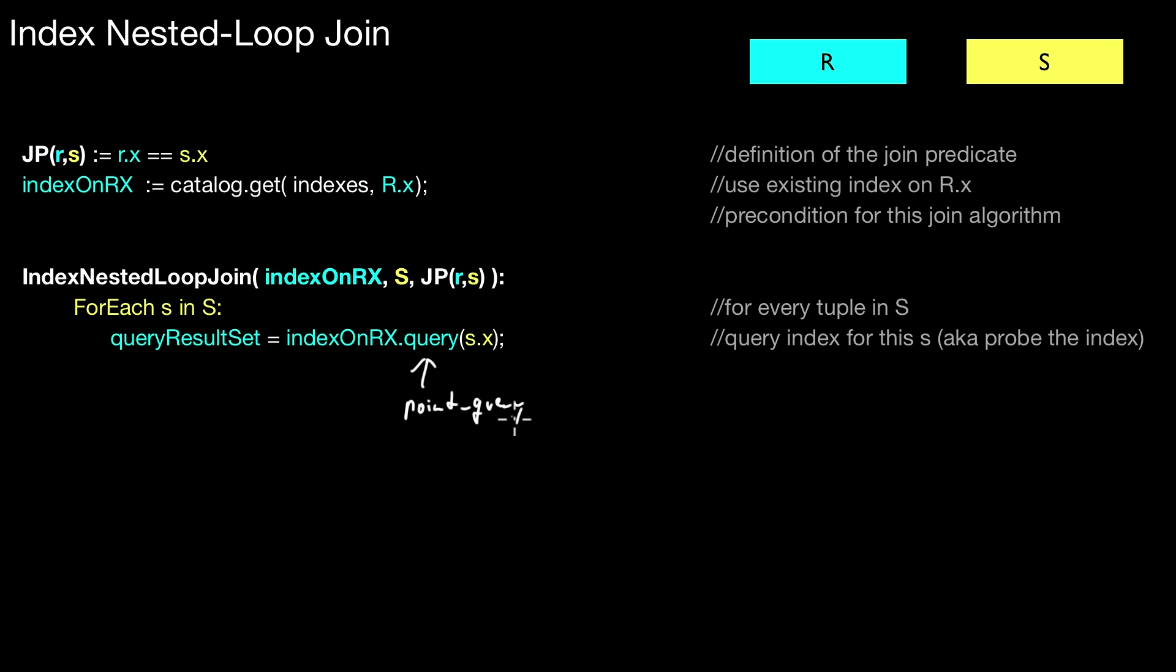That is what is depicted here. So here's the index. There's a query method. A point query, so to say. This is a point query. You can also do that with range queries in special situations. That's another story.